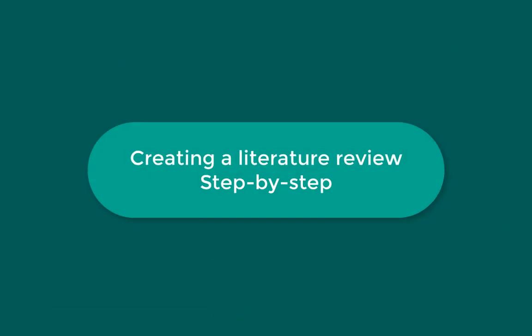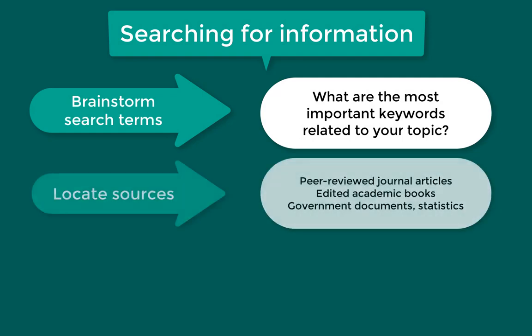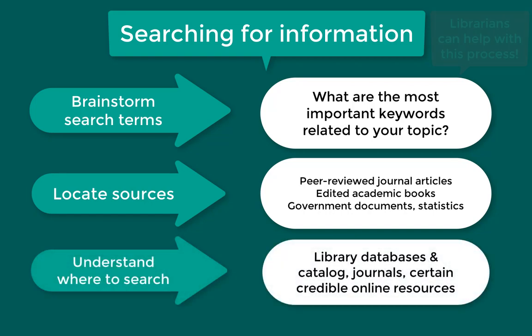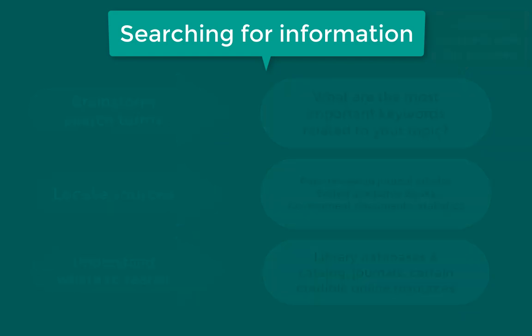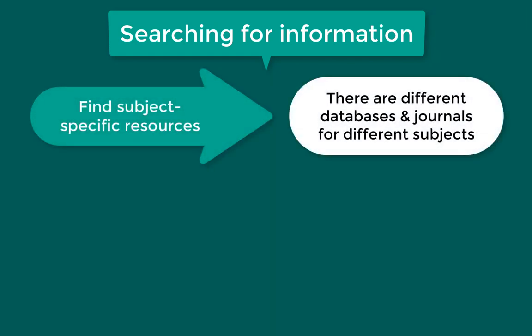Let's talk about the step-by-step process of creating a literature review. To get started, brainstorm relevant keywords and search terms for your topic to find sources such as peer-reviewed journal articles, edited academic books, government documents, statistics, and other relevant information by using library databases, the library catalog, and credible online resources. Search different databases and academic journals depending on your research area.